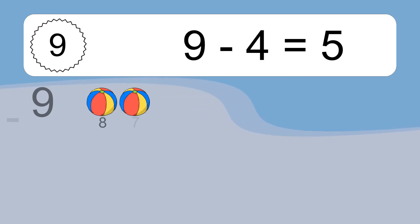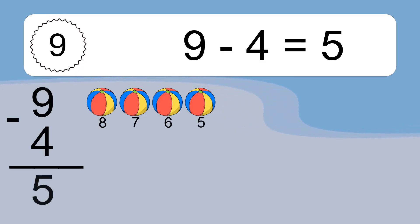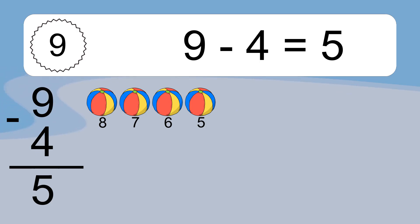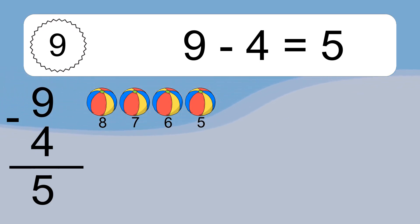9 minus 4 equals what? 9 minus 4 equals 5. Let's count it: 8, 7, 6, 5.